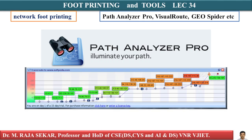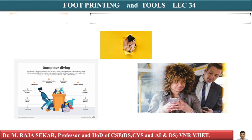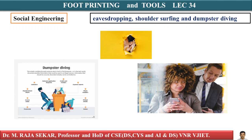Network footprinting tools include Visual Route, Geo Spider, etc., to create a map of the target's network. For social engineering, we implement techniques such as eavesdropping, shoulder surfing, dumpster diving, and phishing, which may help gather more critical information about the target organization. We already discussed eavesdropping, shoulder surfing, and dumpster diving in our previous classes.